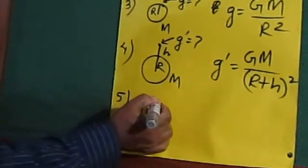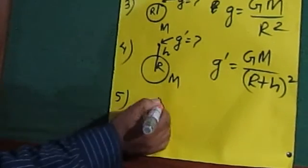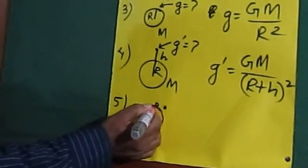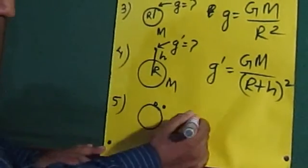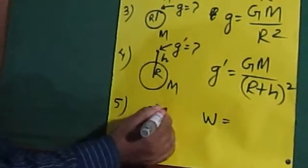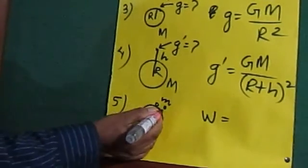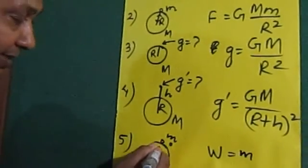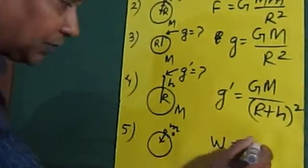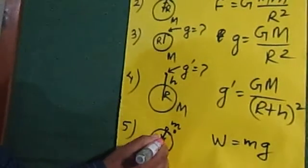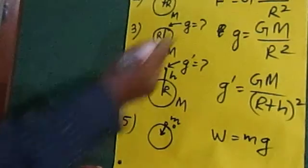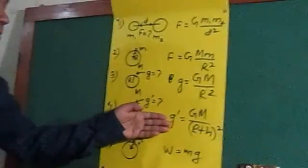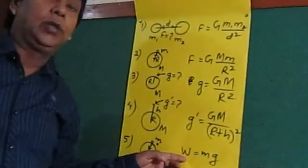If a body is on the surface or near to the surface, then we have to calculate the weight of the body at this place. Weight is equal to mass of this body multiplied by g. This equation is used when the body is on the surface or very close to the surface. Weight of the body is the product of the mass and acceleration due to gravity. Acceleration due to gravity has the direction towards the center of the earth - it is a vector quantity. These equations are normally used to calculate gravitational force, gravity, acceleration due to gravity at certain height, and weight of the body on the surface of the earth.